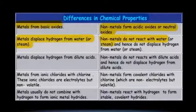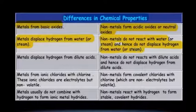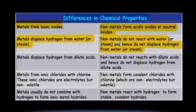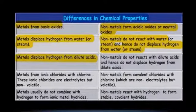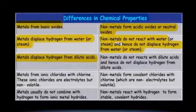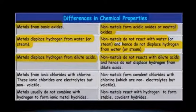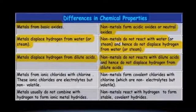Third property: metals displace hydrogen from dilute acids because metals are more reactive than hydrogen. Non-metals, however, do not react with dilute acids, so they will not displace hydrogen from dilute acids either.